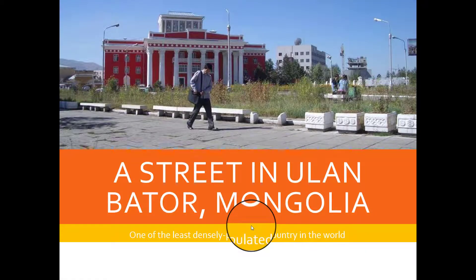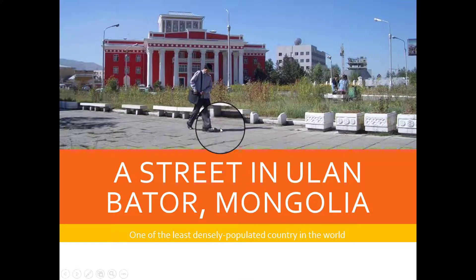This is a different story: a street in Ulaanbaatar, Mongolia, which is one of the least densely populated places in the world. As you see here, this is just one guy walking down a path. Those are the differences of showing a very densely populated area or place versus a least densely populated place, so you can see the difference in picture of what population density really looks like.